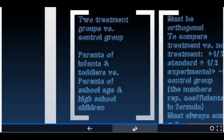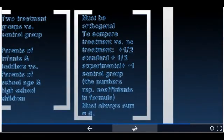There are a variety of things to do, but you'll notice a little versus right there in the middle. These two groups versus this one group, or these two groups versus these two groups. Those things need to be what's called orthogonal.